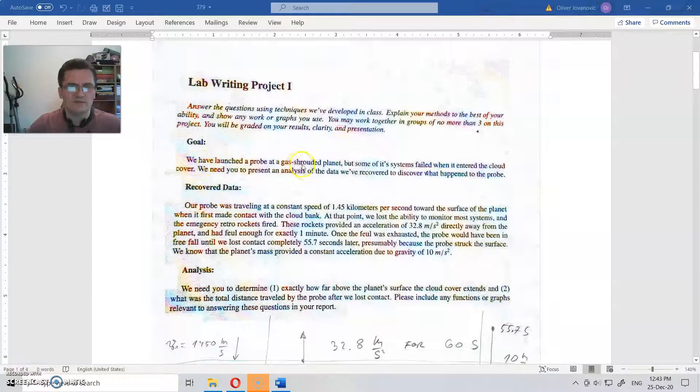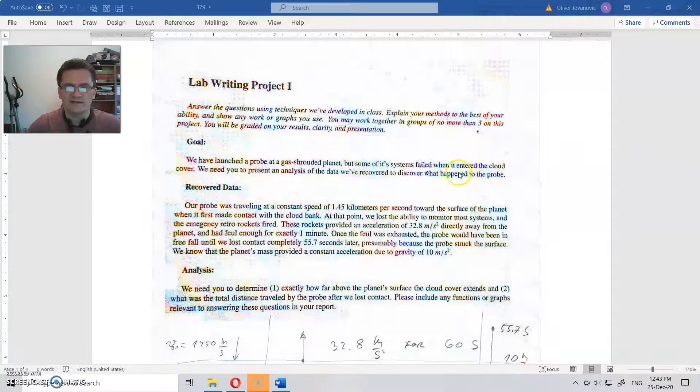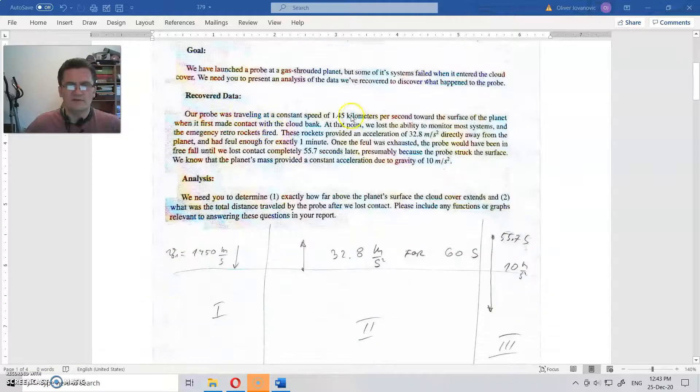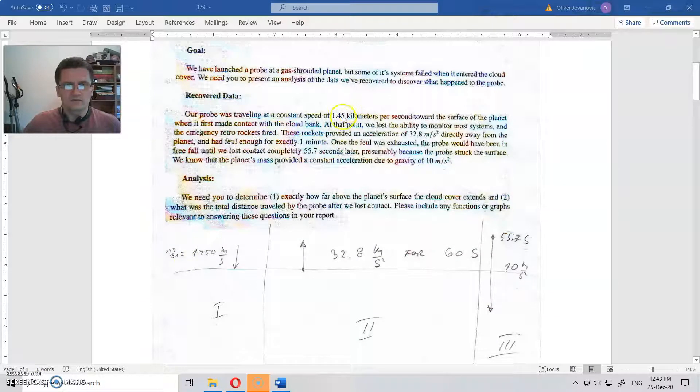Okay, let us see. We have launched a probe at a gas-shrouded planet, but some of its systems failed and it entered the cloud cover. With the present analysis of the data we recovered, we need to discover what happened to the probe. The data shows our probe was traveling at a constant speed of 1.45 kilometers per second—that is 1,450 meters per second. That was the initial speed.